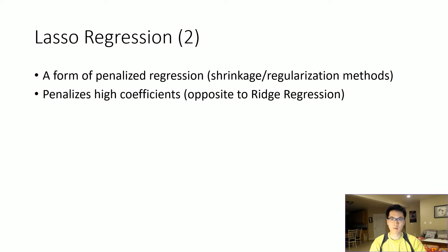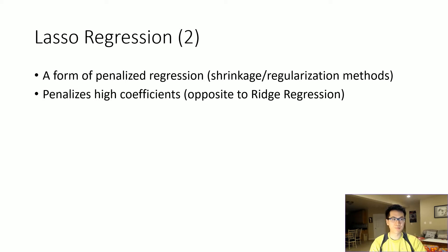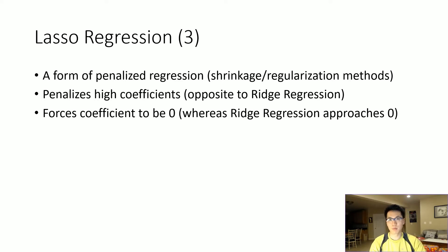Lasso forces coefficients to be zero, thereby taking out the features within your overall model, compared to ridge where it approaches zero and the coefficients of those specific features are very close to zero, and those particular features are still in the model.